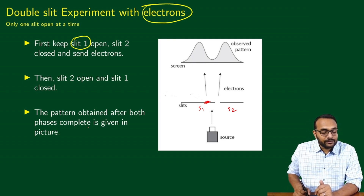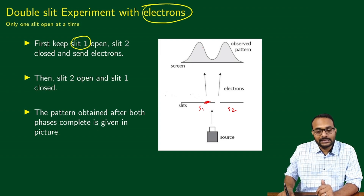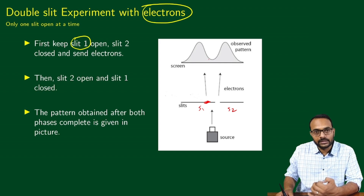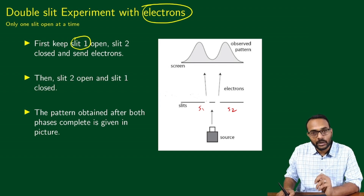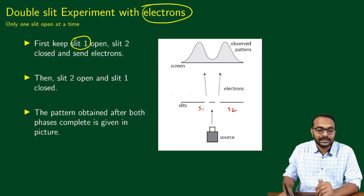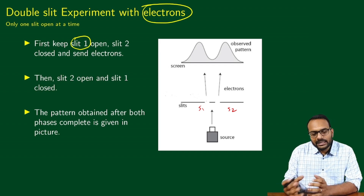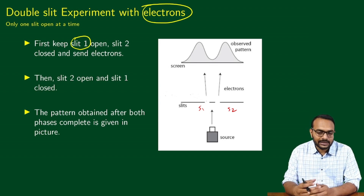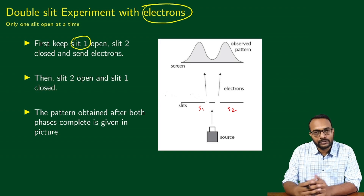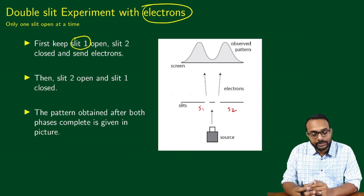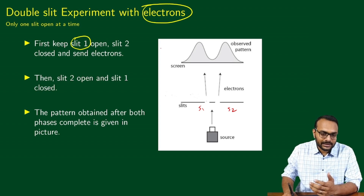This is the pattern we get after both phases are complete. One phase is where you keep slit 1 open and slit 2 closed, then keep slit 1 closed and slit 2 open. I'll be a little bit sloppy here — the exact pattern won't look exactly like this; there could be some first-order effects which we'll neglect for the moment. So just remember this is not completely accurate — think of it as a representative picture.